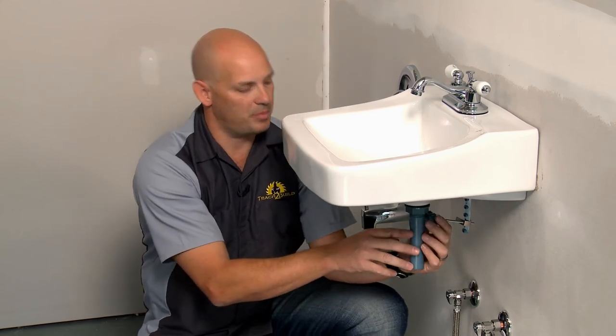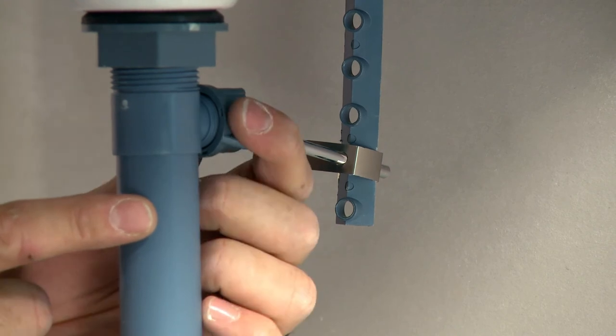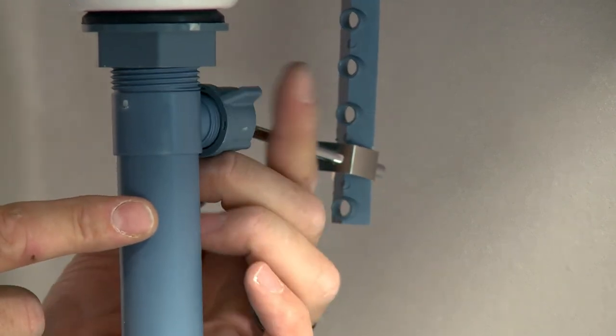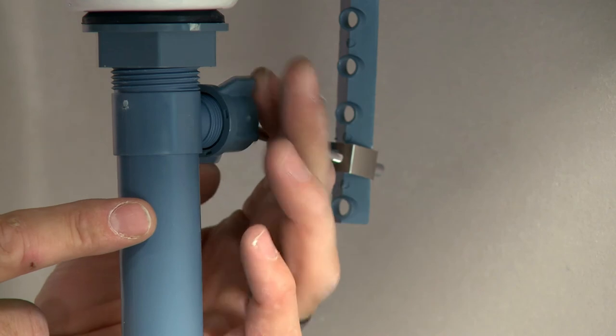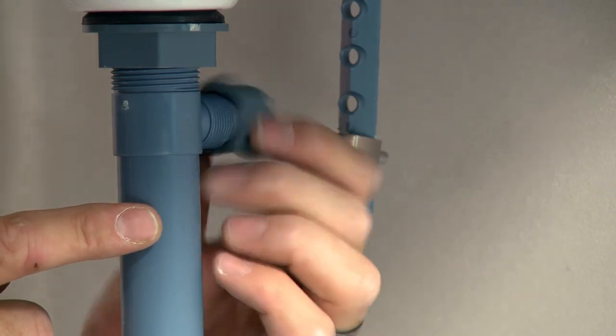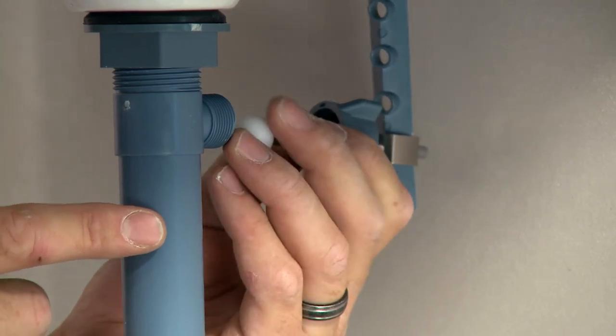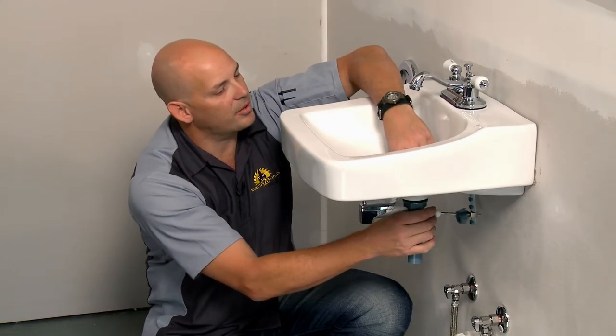All you're going to do is turn this nut to loosen it. Be prepared for the possibility of a little water or debris coming out there. Once that's off, you can pull that rod straight out enough to loosen the stopper in the sink.